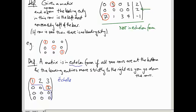Here's an example of something that is not in echelon form: the leading entries, 3 and 4, are not moving to the right — they stay in the first column when they should be moving to the right.